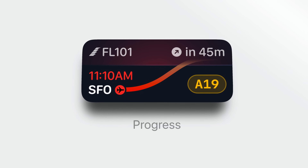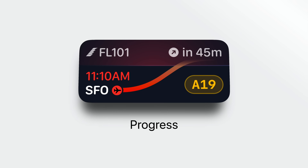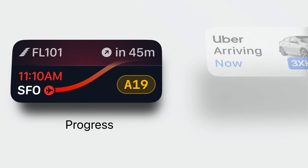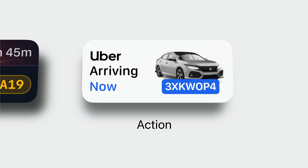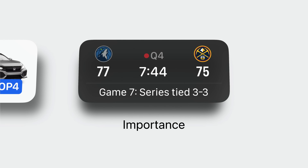To answer that, we recommend showing only what's necessary to communicate significant states in the live activity. These are states that help people understand progress, like how long until your flight touches down. Or states that might require action, like getting to the curb because your Uber is arriving. Or these could just be states that someone might really care about, such as a change in the score of a game.